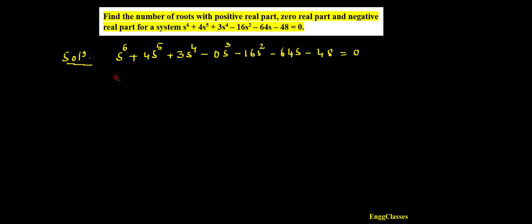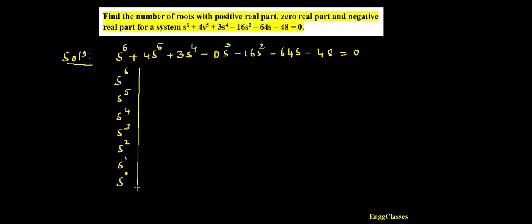Once this is done I can construct the Routh array. Let me write s to the power 6, s to the power 5, s to the power 4, s to the power 3, s squared, s to the power 1, and lastly s to the power 0. Now I write the coefficients of even powers: coefficient of s^6 is 1, s^4 is 3, s^2 is minus 16, and the constant term is minus 48.